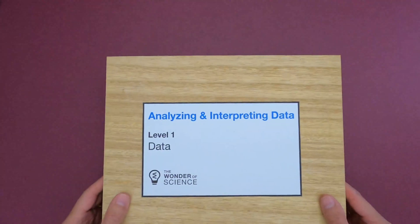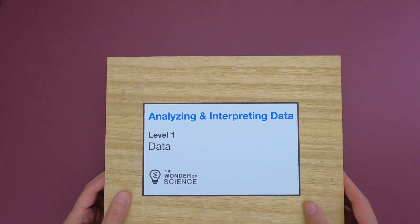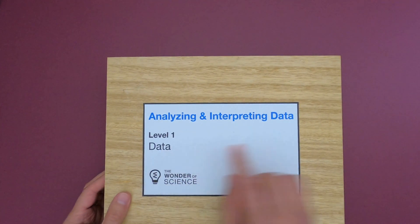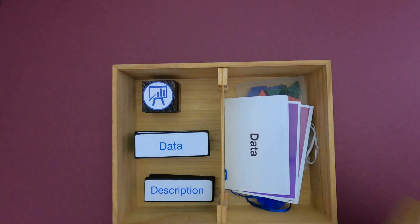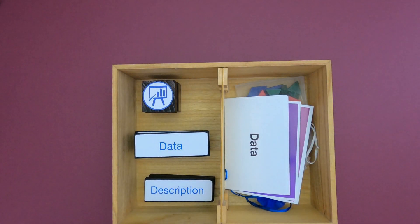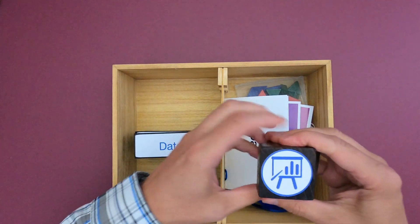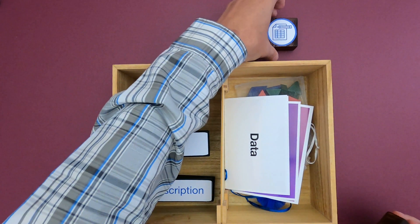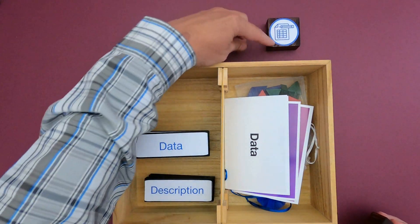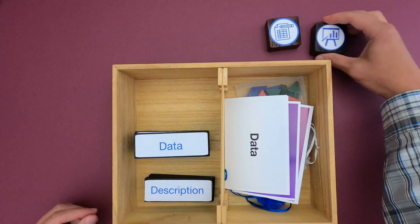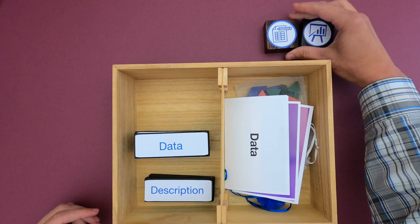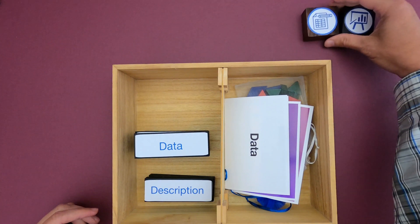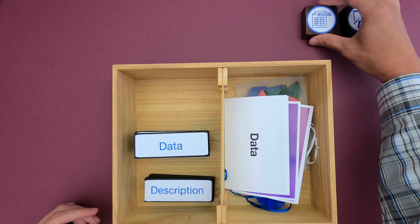Hi, it's Mr. Andersen and this is a mini lesson on analyzing and interpreting data, level one data. What is data? Data is simply information. We gather information from phenomena — it could come from investigations — but what we really want to do is make sense of that data.